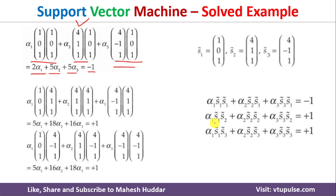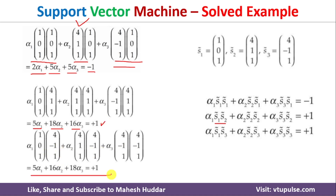For the second equation, we compute: S1·S2: 1×4 + 0×1 + 1×1 = 5, giving 5α1. S2·S2: 4×4 + 1×1 + 1×1 = 18, giving 18α2. S3·S2: 4×4 + (-1)×1 + 1×1 = 16, giving 16α3. So the second equation is: 5α1 + 18α2 + 16α3 = 1. We follow the same approach for the third equation.